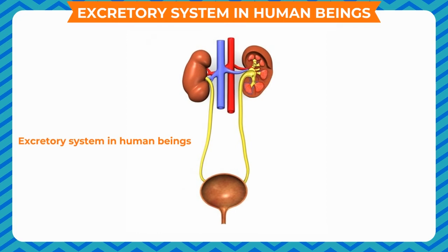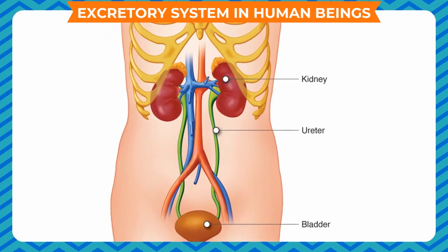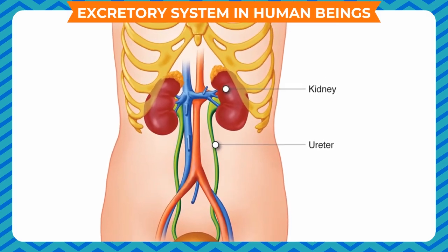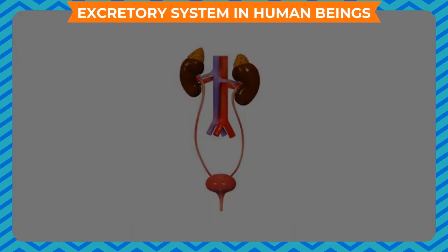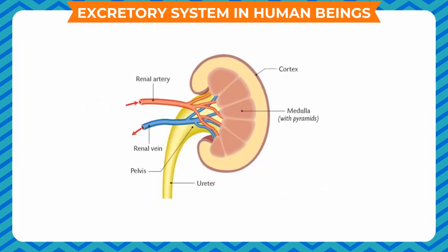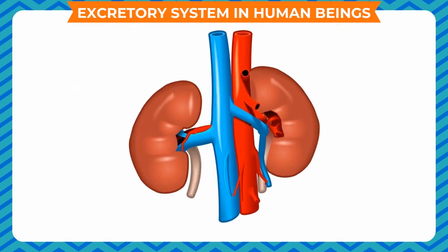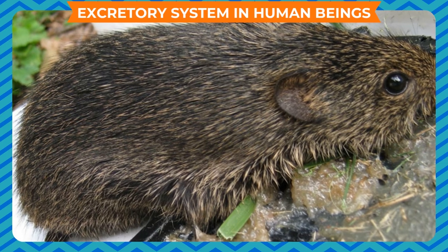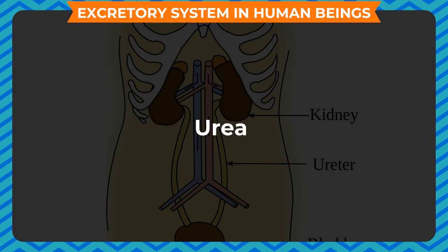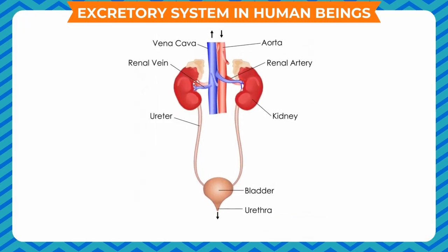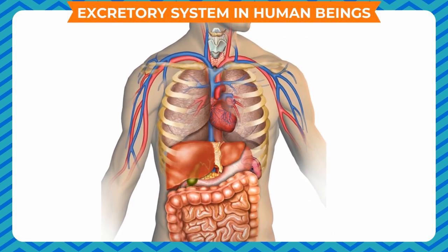Excretory System in Human Beings: Toxic or poisonous substances produced as a result of various biochemical processes within the body must be thrown out from time to time. There are specialized organs present for this purpose. The process of removal of waste is called excretion. Kidneys are the main excretory organs in man. Ammonia is the main excretory product in animals; in humans, this ammonia is converted into urea and removed along with urine — a process called ureotilism. Human beings have four different ways of getting rid of body wastes.